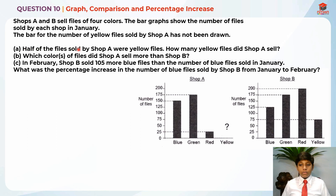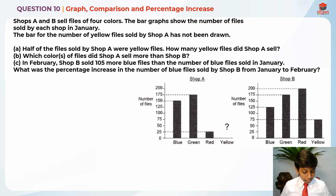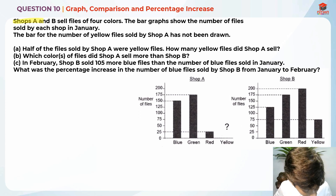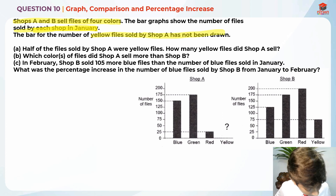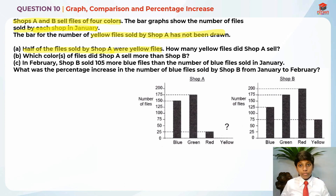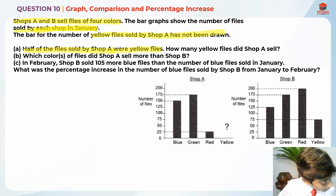Part A: half of the files sold by shop A were yellow files. How many yellow files did shop A sell? So let's highlight the key information. Shops A and B sell files in four colors, sold in January. Yellow files in shop A has not been drawn. Half of the files sold by shop A were yellow files. So basically, they're asking us how many yellow files did shop A sell.